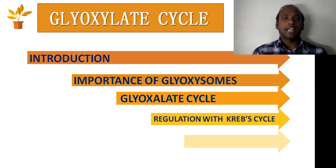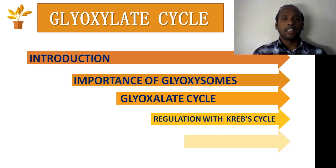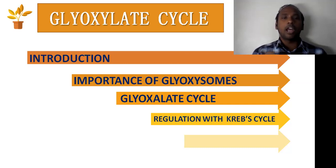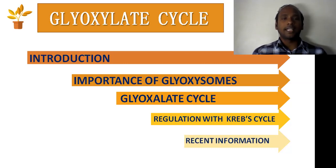Most of the reactions in the glyoxylate cycle are similar to the citric acid cycle, except for a few variations. The regulation is important with respect to the Krebs cycle. Once the Krebs cycle is activated, the glyoxylate cycle has to be shut down, and if the glyoxylate cycle is activated, the Krebs cycle has to be shut down. I will discuss how these two pathways regulate each other, and also provide some recent information related to the glyoxylate cycle.